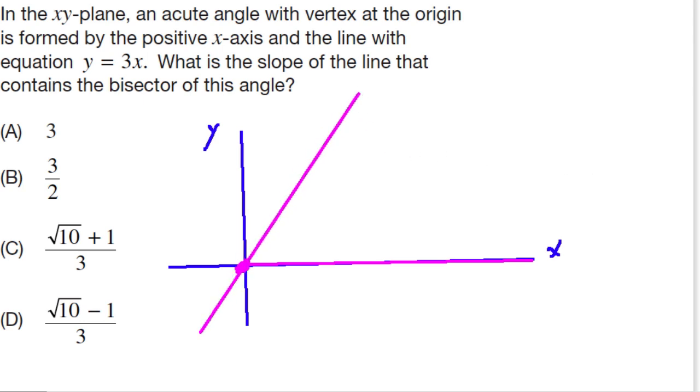Now, what's interesting is it says, what is the slope of the line that bisects, that contains the bisector of this angle? Which angle? This one right here. So we're looking for bisectors of that angle.